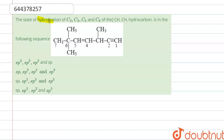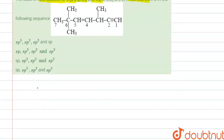Hello everyone. The question is: the state of hybridization of C2, C3, C5, and C6 of the given hydrocarbon is in the following sequence. This is the figure given to us. We have to find out the hybridization of carbon two, three, five, and six. So let's see here — if we draw the structure, it is CH3-C≡C-CH3, CH double bond CH-CH, CH3, C triple bond CH.